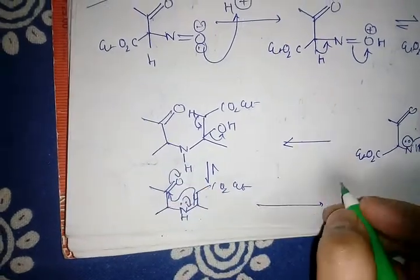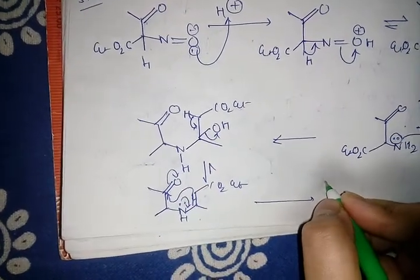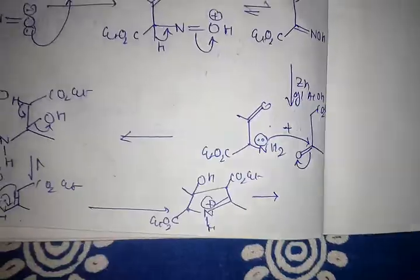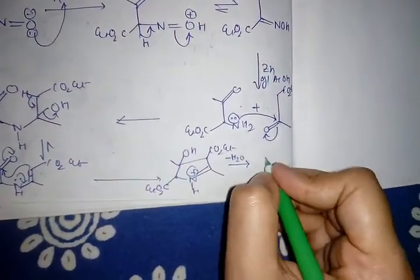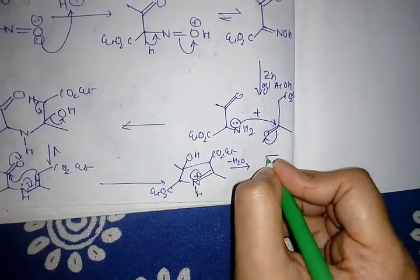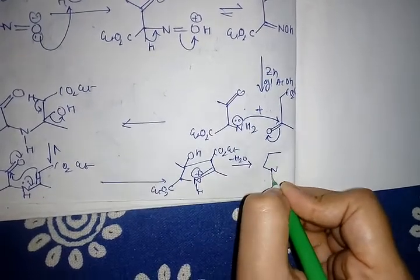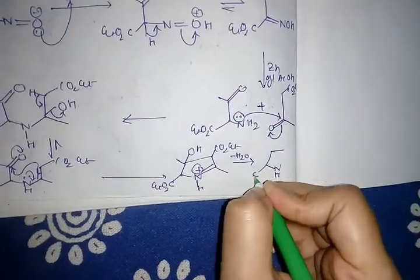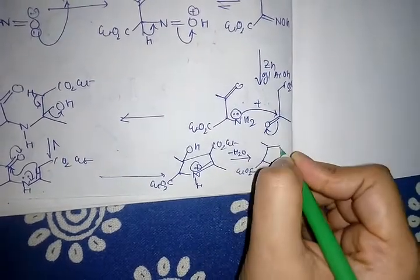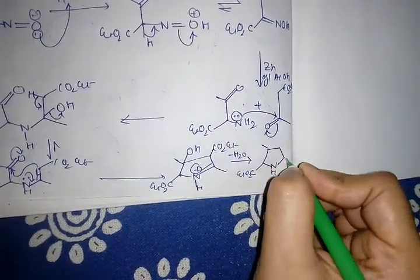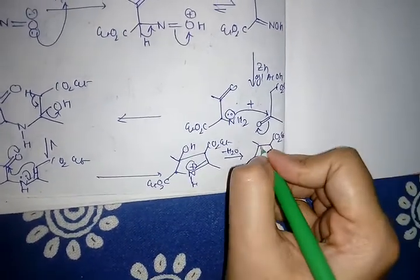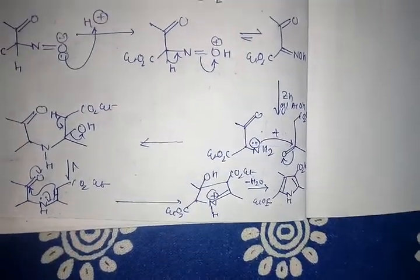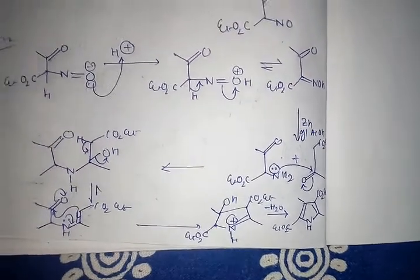Now a sigma rearrangement occurs. Again, another H2O molecule leaves and we get pyrrole. This is Knorr pyrrole product and the synthesis is called Knorr pyrrole synthesis. Thank you.